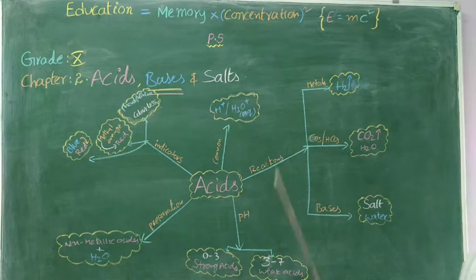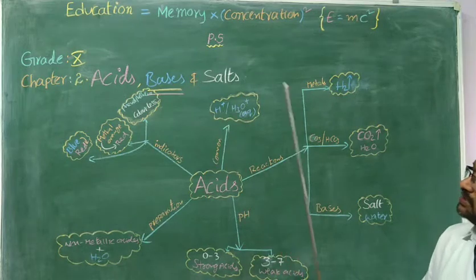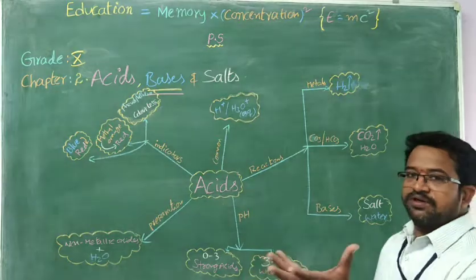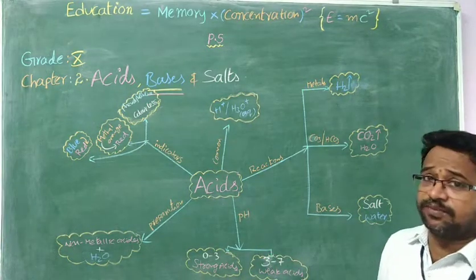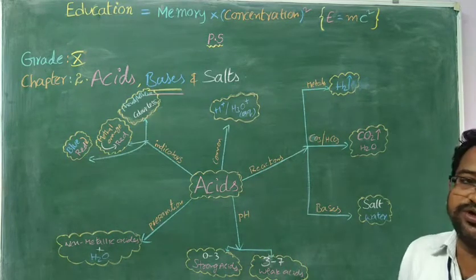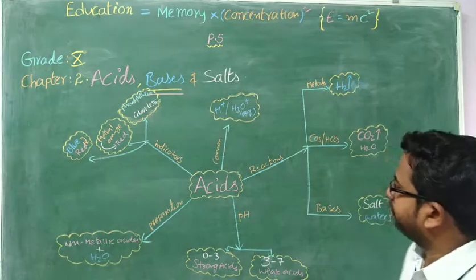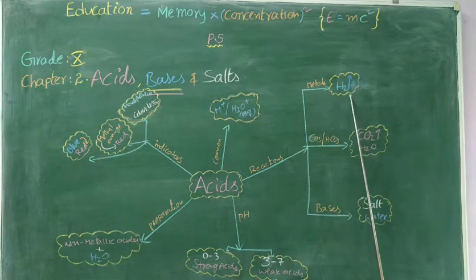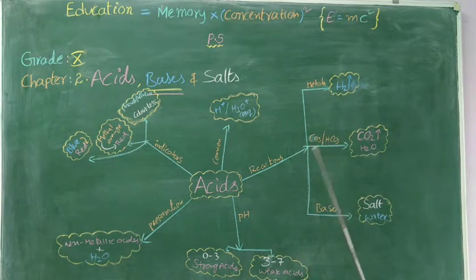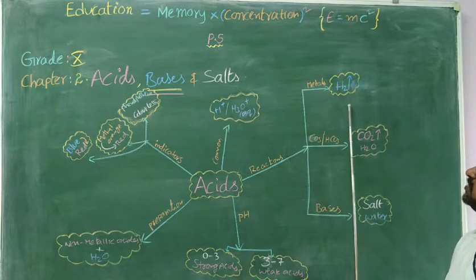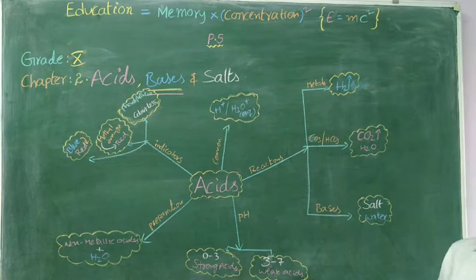Then, what is the common thing in acids? Hydronium ions or H3O plus ions in aqueous solution. We need one activity also — taking a bulb, checking conductivity, whether the bulb is glowing or not. With the help of that, we are going to identify the common ions present in acids. Next, look at the reactions. Acids react with metals and liberate hydrogen gas. Acids react with carbonates and bicarbonates and release carbon dioxide and water. In both cases, the respective salt is going to be formed.